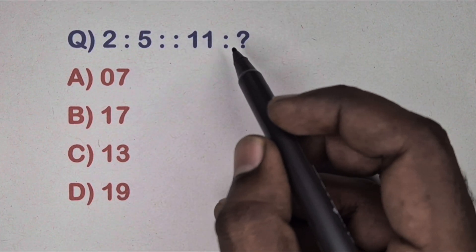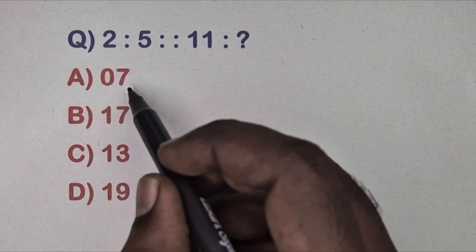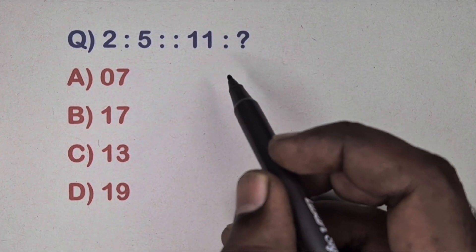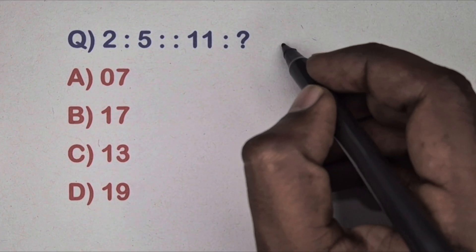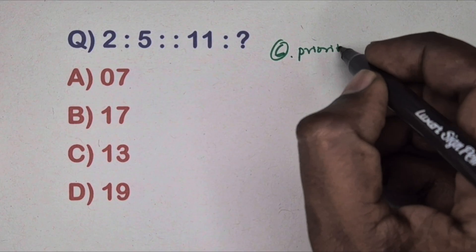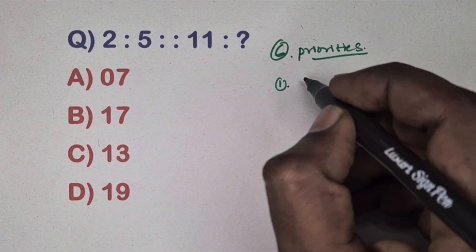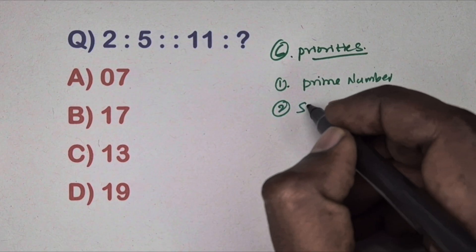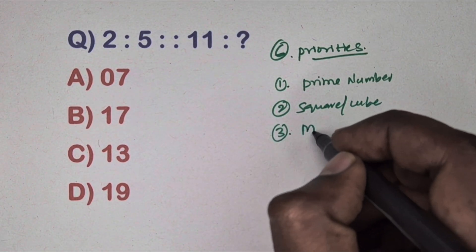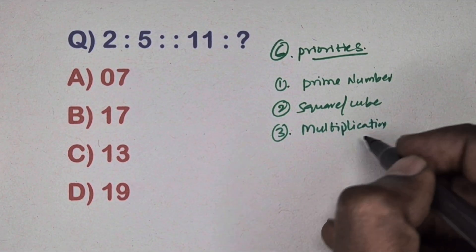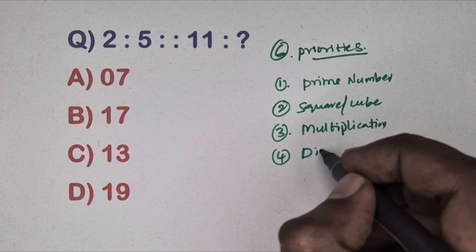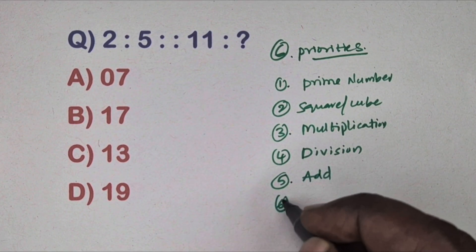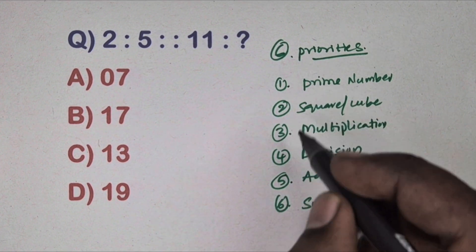Hi friends, this video is about analogy questions. In this video we will learn different types of analogy questions. To solve any analogy question there are six priorities: first is prime number relation, second is square-cube relation, third is multiplication relation, fourth is division relation, fifth is addition, sixth is subtraction. These six rules are very important to solve any question.